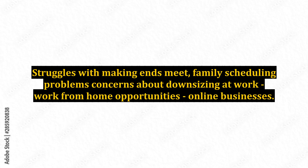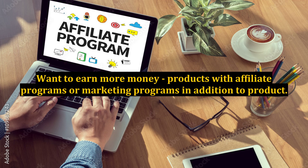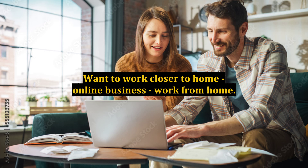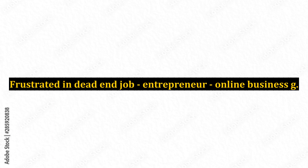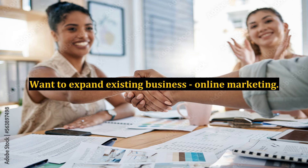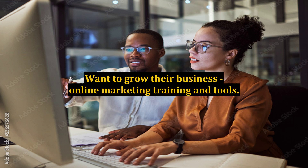Problem C — struggles with making ends meet, family scheduling problems, concerns about downsizing at work: work from home opportunities, online businesses. Problem D — want to earn more money: products with affiliate programs or marketing programs in addition to the product. Problem E — want to work closer to home: online business, work from home. Problem F — frustrated with a dead-end job: entrepreneur, online business. Problem G — want to expand existing business: online marketing. Problem H — want to grow their business: online marketing training and tools.